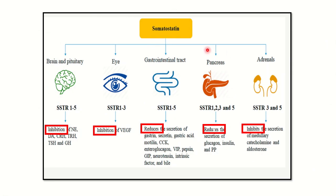Somatostatin acts on different parts of the body: the brain and pituitary gland, the gastrointestinal tract, the pancreas, the adrenals, and the gallbladder. In all these areas it has an inhibitory function — in the adrenal glands it inhibits secretion of medullary catecholamines and aldosterone. Somatostatin has a globally negative function, reducing the activity of other hormones and organs.